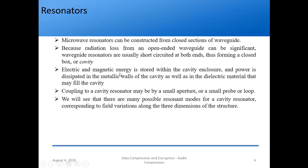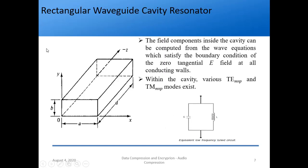Coupling to a cavity resonator may be achieved by a small aperture, a small probe, or a loop — essentially a wire. We will see in coming slides how it is excited. There are many possible resonant modes for a cavity resonator — TE and TM modes — corresponding to field variations along three dimensions. In a rectangular waveguide we saw two dimensions along X and Y; here we also have the Z dimension. The field components inside the cavity can be computed from the wave equations which satisfy the boundary conditions.